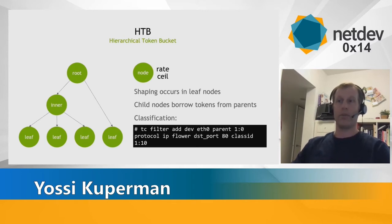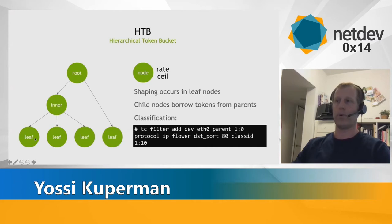What is interesting about HTB is its hierarchical structure. We can arrange the classes in a form of a tree, where the leaf nodes perform the actual shaping, and the inner nodes define the borrowing relationship between class siblings. For example, one leaf node can borrow tokens from a sibling up to its configured ceil, given of course that those tokens are not being used.